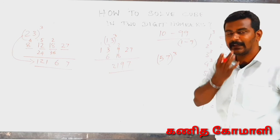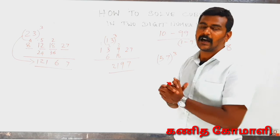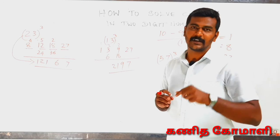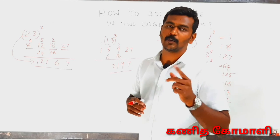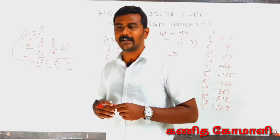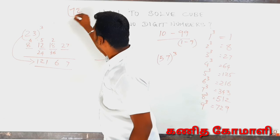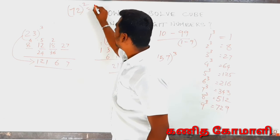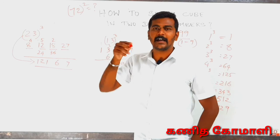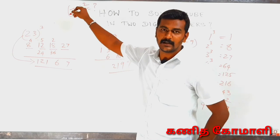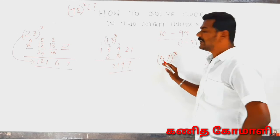Another question. One number: 57 cube. 57 cube. Okay? What do you do? How do you do? This is the answer in the comment section. Okay? Now let's go to 57.